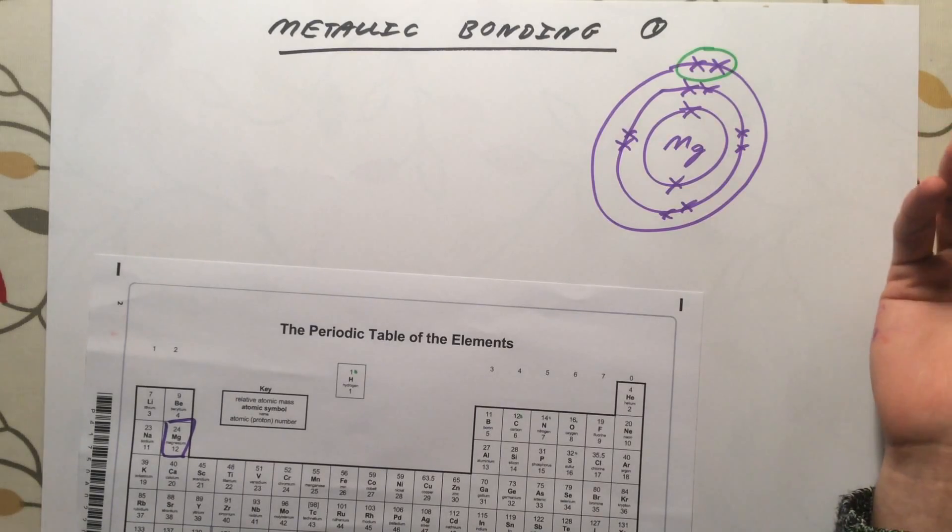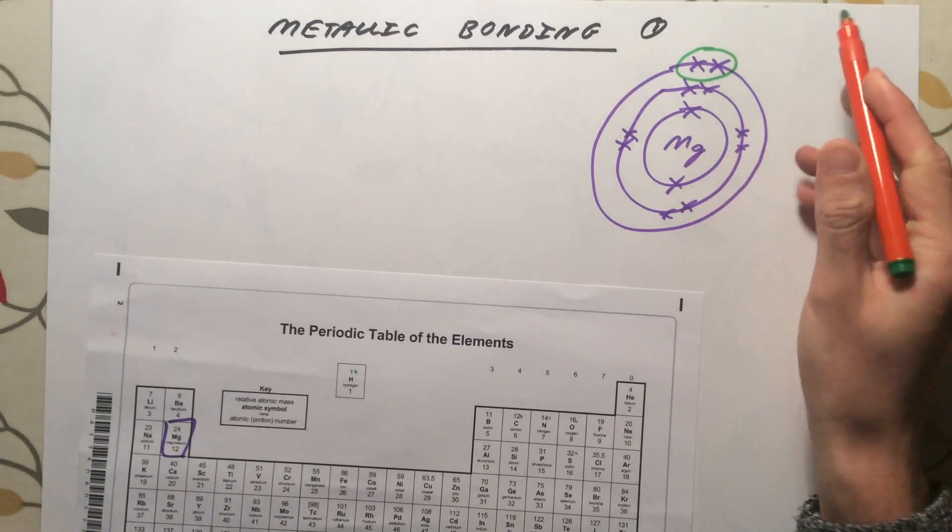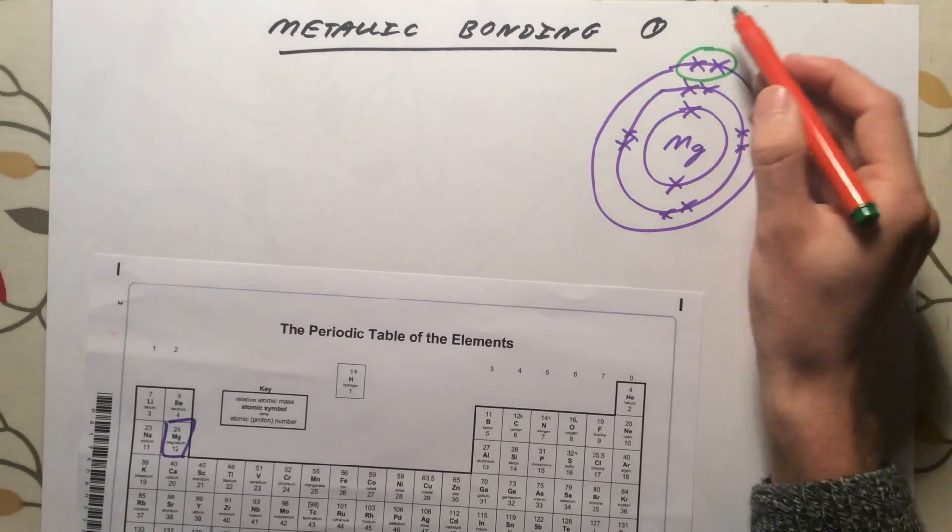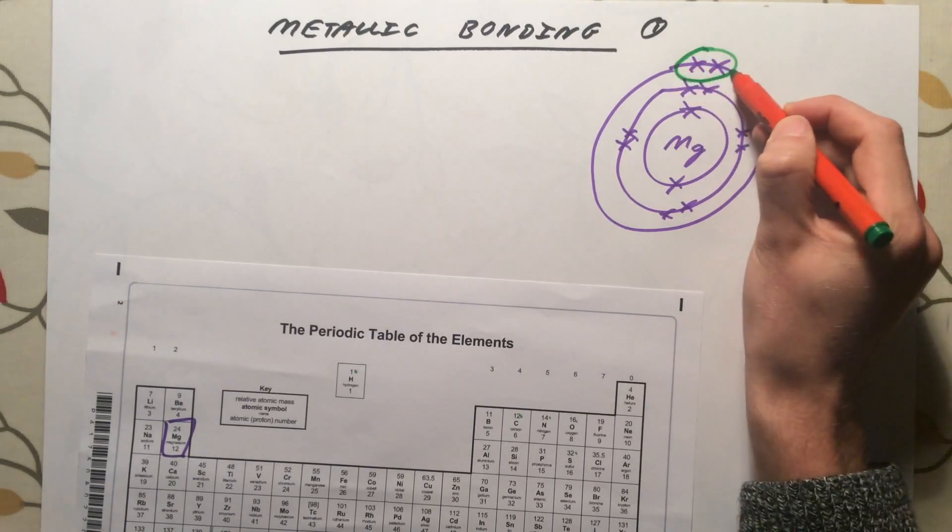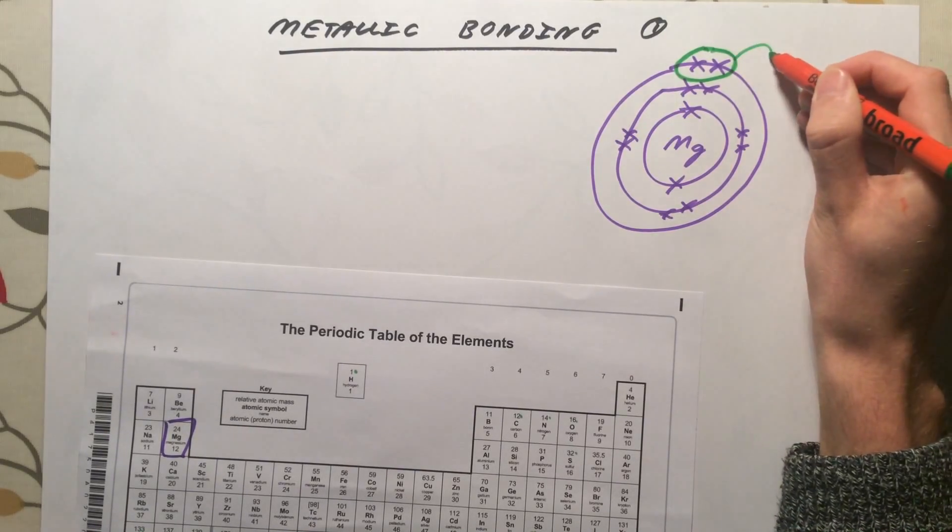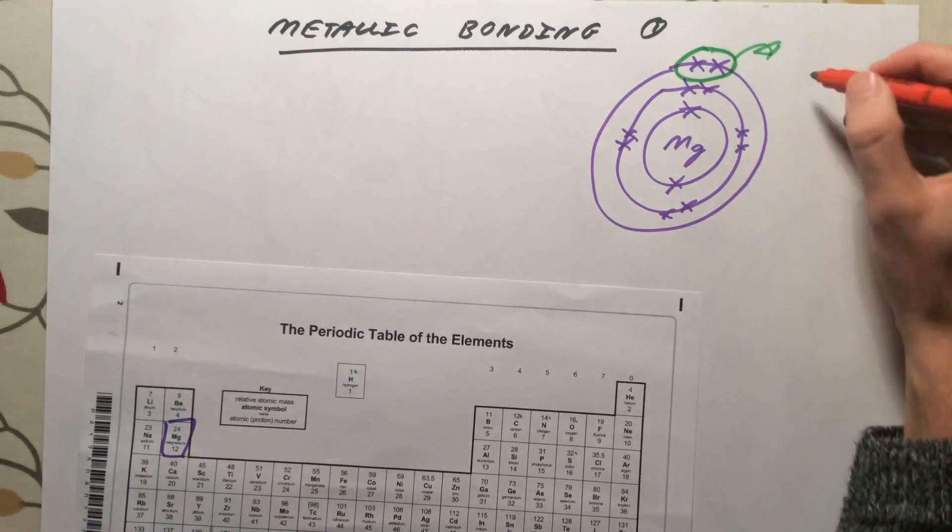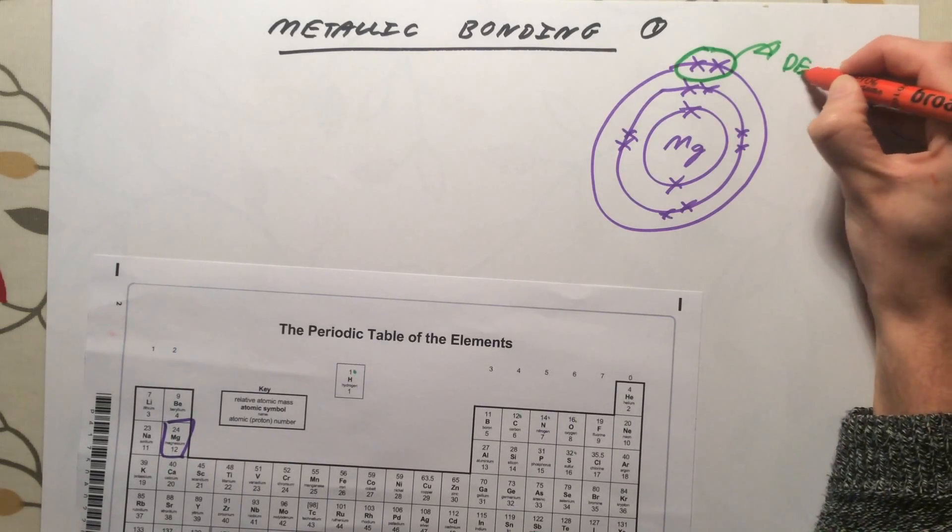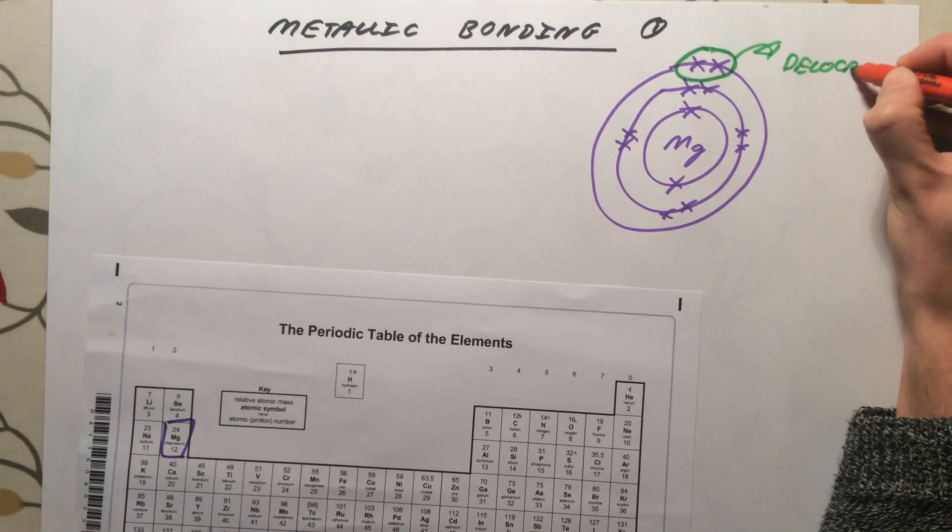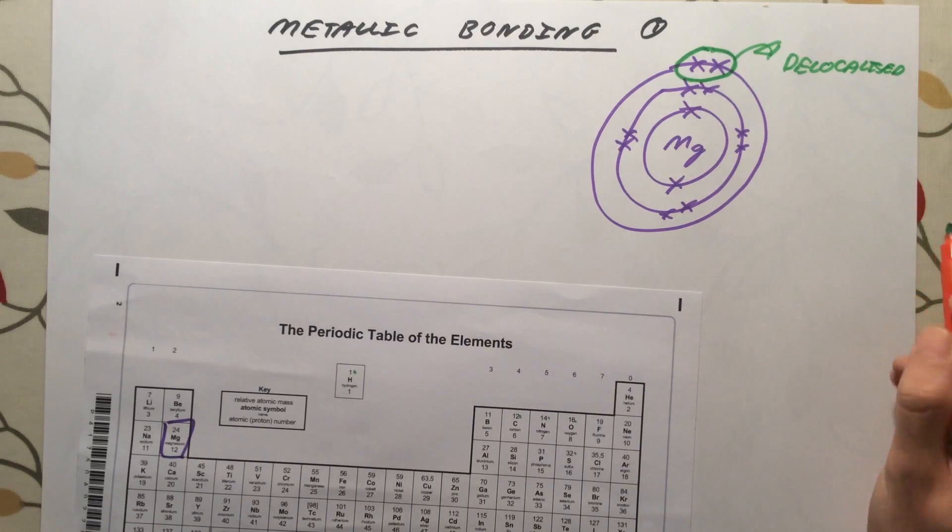However, there is nowhere for them to go. It cannot pass them on to another magnesium atom. So what actually happens is quite clever. Magnesium just turfs these two out, says you can't stay anymore, off you go. I don't really care where you end up. And these two electrons end up becoming delocalized. They have no home, if you like. They are delocalized electrons.